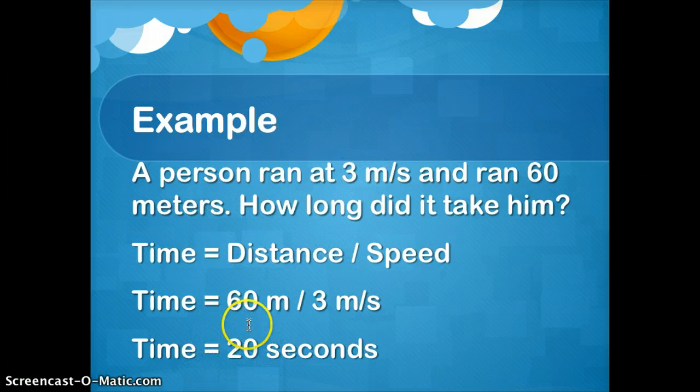So 60 divided by 3 is 20. And the reason you know it's seconds is because back in the problem, they use meters per second. If it said meters per minute, this answer would be 20 minutes. So you need to, again, look back at the problem to figure out what the unit is.